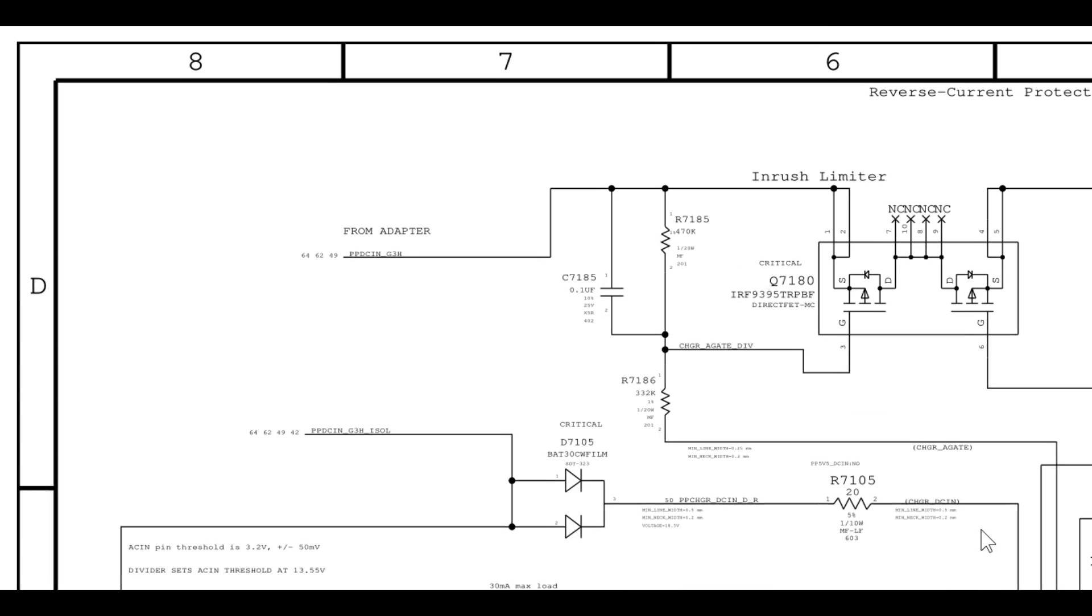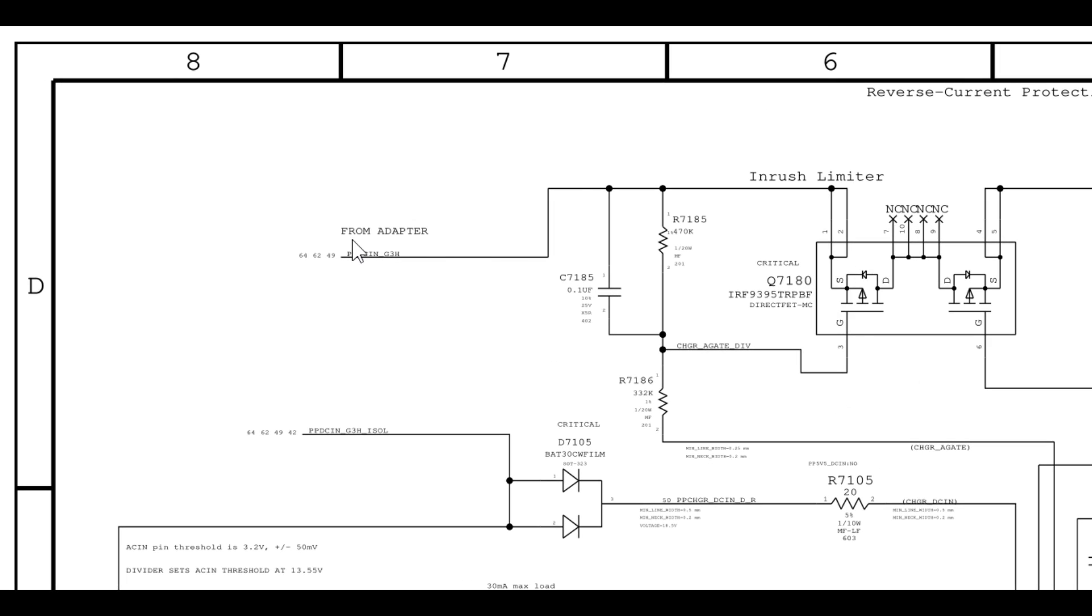As you can see over here, P-channel. Source is going to be coming from the adapter. This is going to be 18 volts in the adapter. Now, this resistor R7185 takes the 18 volts that would be on the source of the transistor and puts it on the gate, which means the voltage in the source and the gate would be equal, which means it would never turn on.